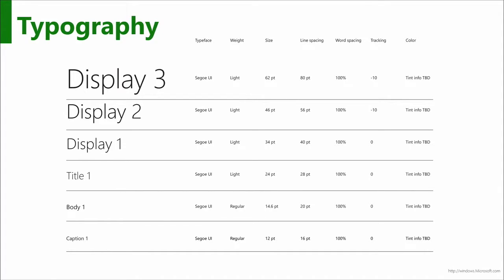Let's start with typography. There have been some changes in the typography used in Windows 10. The Segoe font has not changed — we're still using Segoe. But the type ramp is changing a little bit — it's getting smaller and tighter. If there's a theme, it's that things are getting tighter and thinner, with less white space and smaller margins. Using light fonts creates a much crisper look, which also works well with higher-resolution screens that are becoming common.